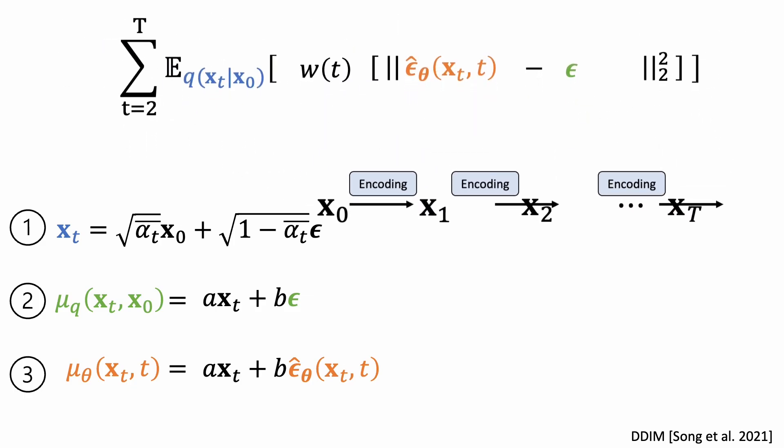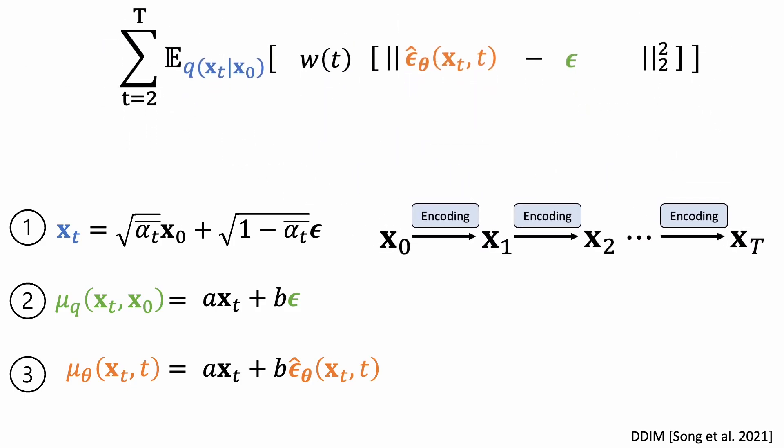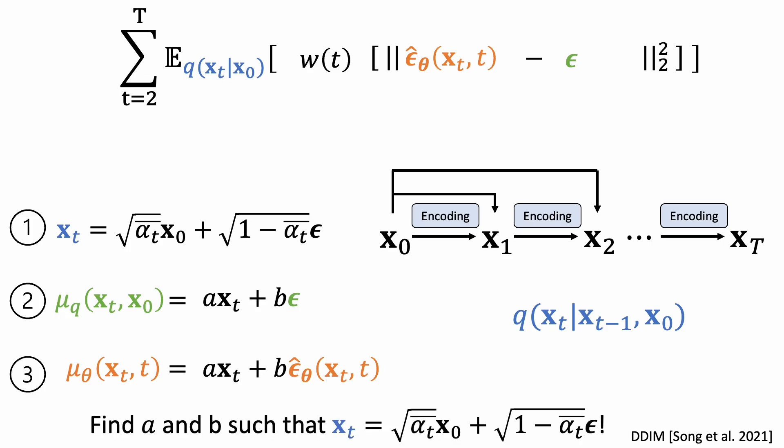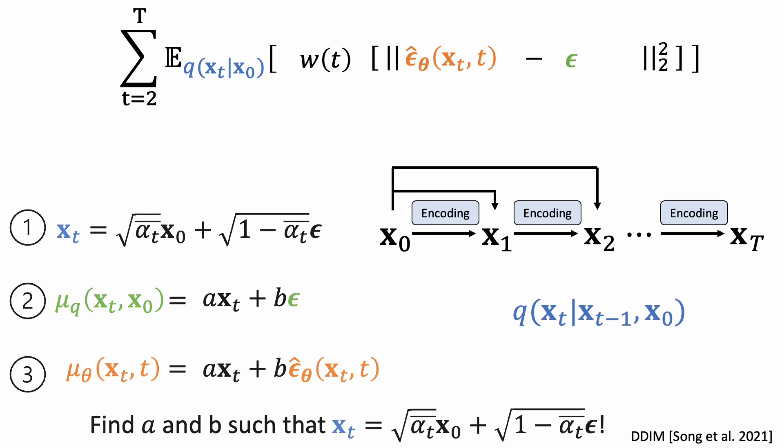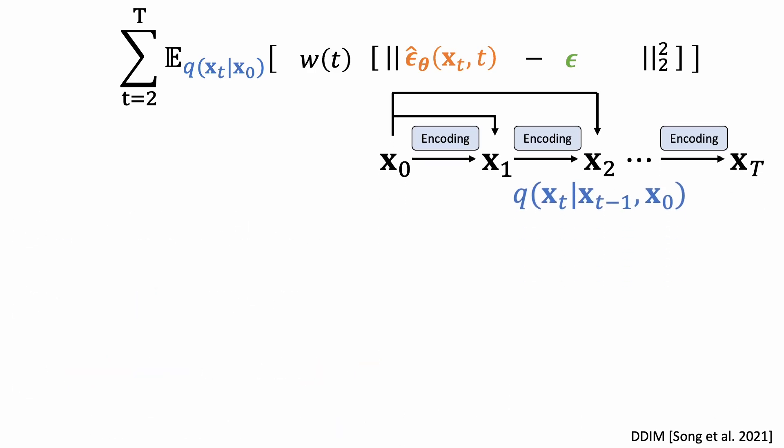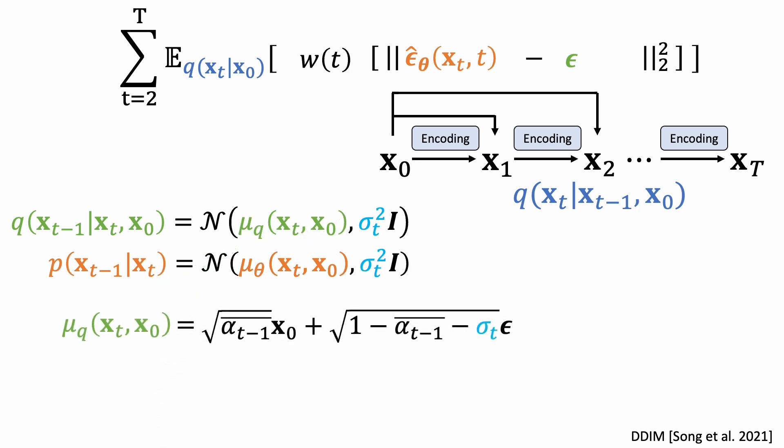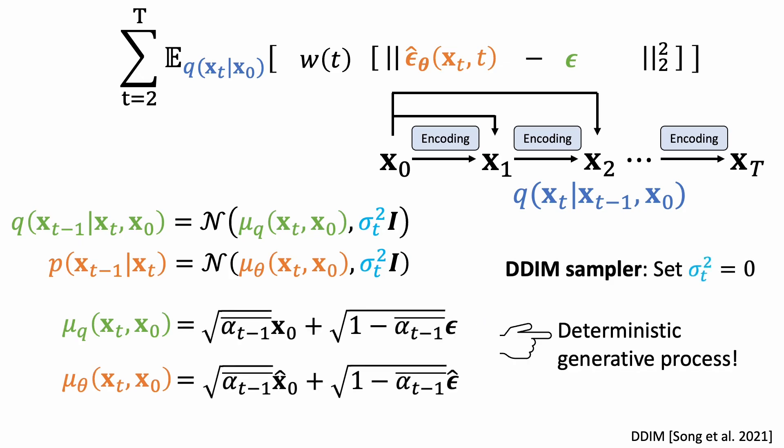These three constraints do not assume the transition probability to be a Markovian process. In this DDIM paper, they construct a class of non-Markovian diffusion processes and find A and B that satisfy these constraints. This gives us these two Gaussian distributions. Interestingly, the sigma_t can be set to arbitrary values. By setting them to zeros, we get a deterministic generation process. The only randomness comes from the initial sample noise.